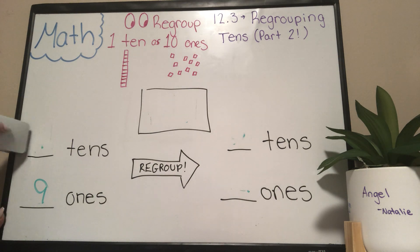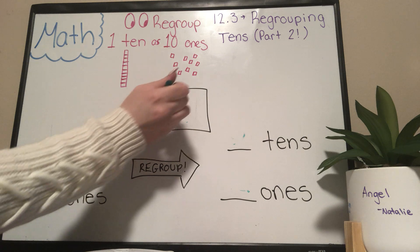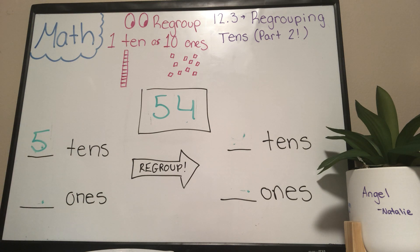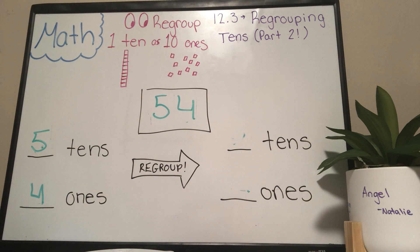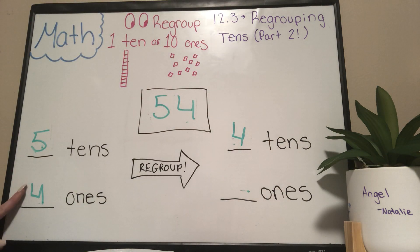Our next number is fifty-four. How many tens are in fifty-four? Five tens. How many ones? Four. Take away one ten — five minus one is four. And what is four plus ten? Fourteen.